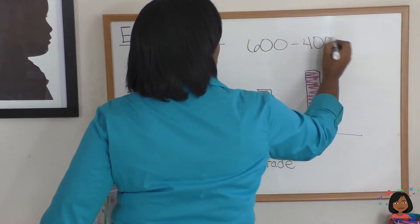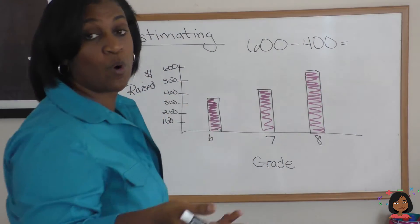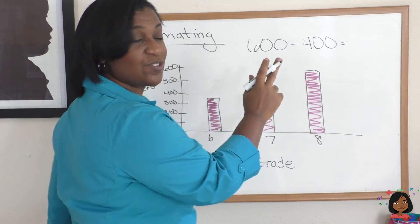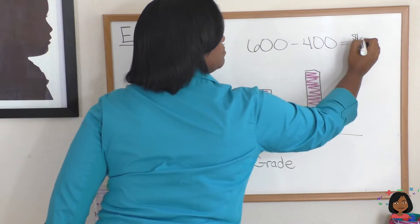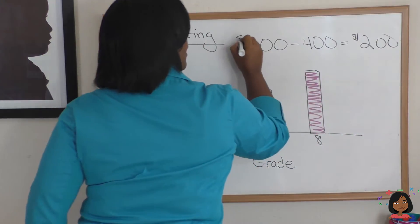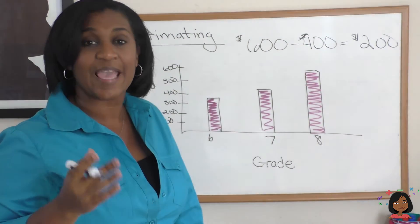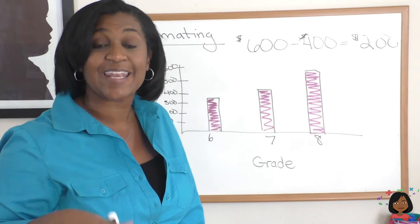And since we're asking how much more the 8th graders than the 6th graders, we're going to subtract. 600 minus 400 is 200, and there you go. There's an example of how estimation can help us get a roundabout idea of how much more money the 8th grade raised than the 6th grade.